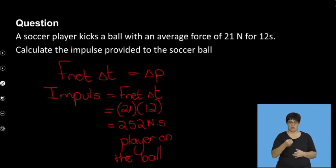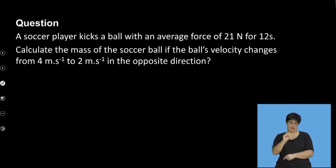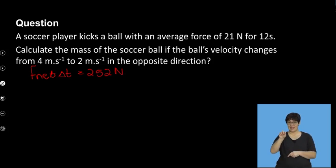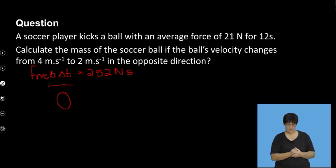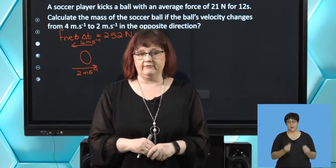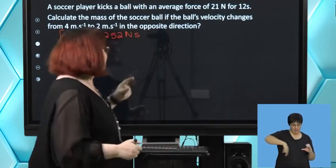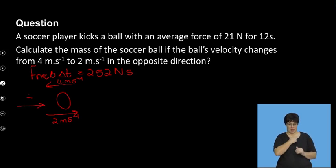We now know what the impulse is. Now they want us to calculate the mass of the soccer ball if the ball's velocity changes from 4 meters per second to 2 meters per second in the opposite direction. I know that F net delta T is 252 newton seconds. The soccer ball is going 4 meters per second towards the player and then 2 meters per second away from the player. Impulse is a vector — we've determined that to the right is positive, which means the initial velocity was negative.